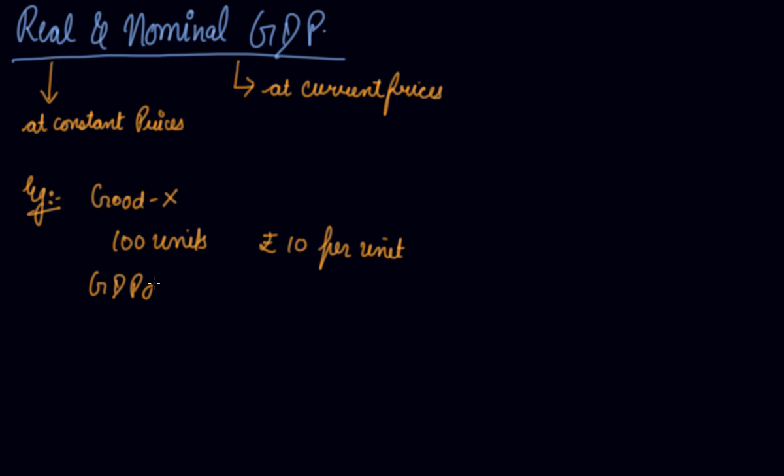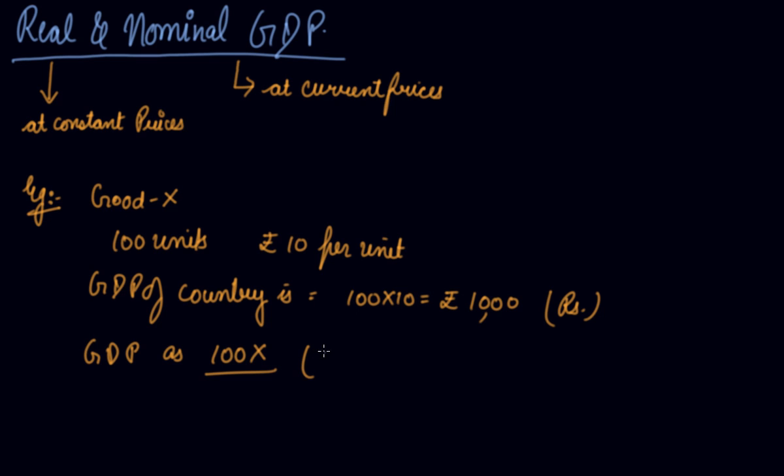So your GDP of the country is 100 into 10, that is rupees 1000. You can also express the country's GDP as 100X, meaning 100 goods. This is in terms of rupees and this is in terms of quantities.